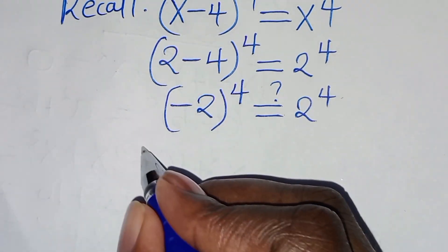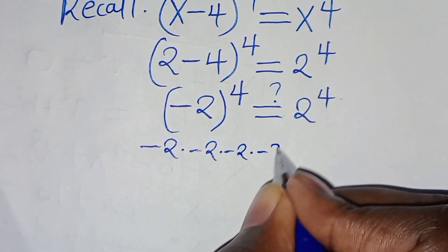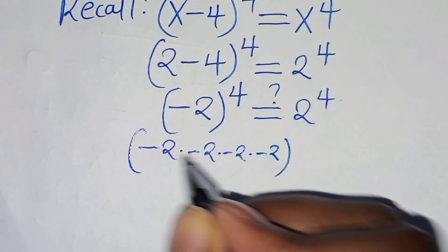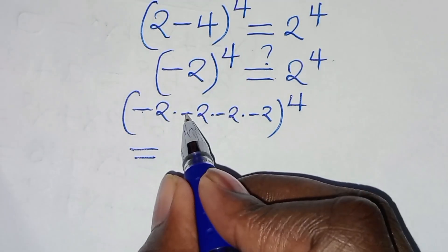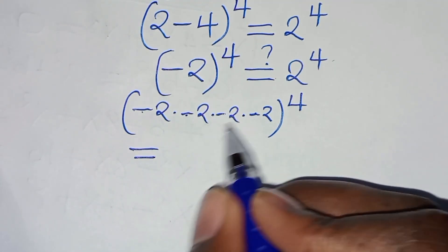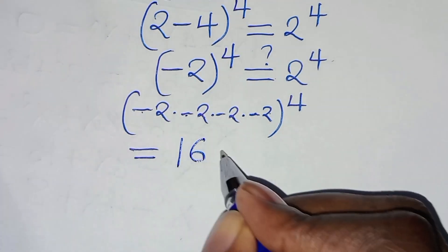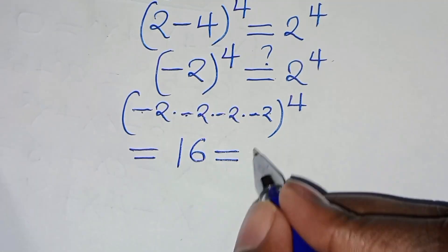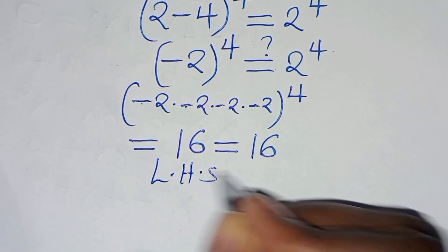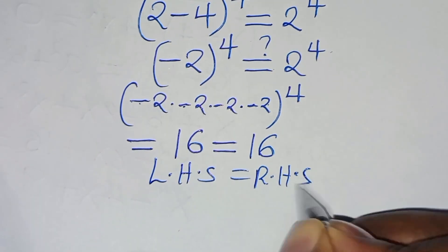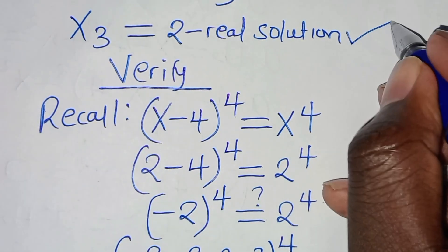Now minus 2 to power 4 is the same thing as minus 2 times minus 2 times minus 2 times minus 2. Minus times minus is positive, and minus times minus is positive, so we have 2 times 2 times 2, which is 8, times 2, this is equal to 16. This is equal to 2 to power 4, which is equal to 16. So this implies that the left hand side is equal to the right hand side, and this proves that x3, which is equal to 2, satisfies the equation.